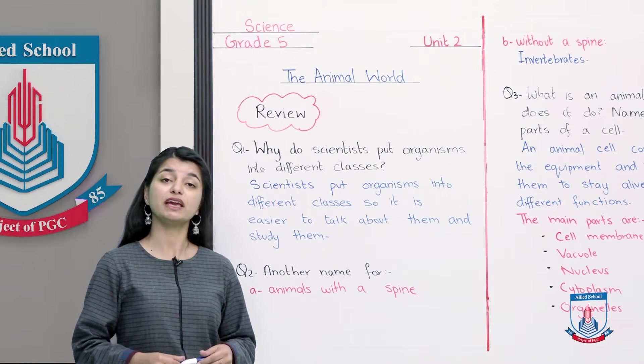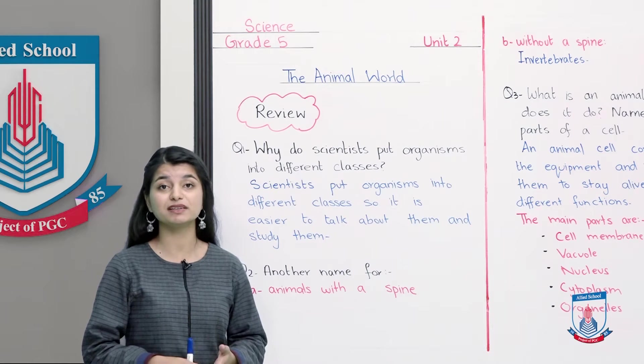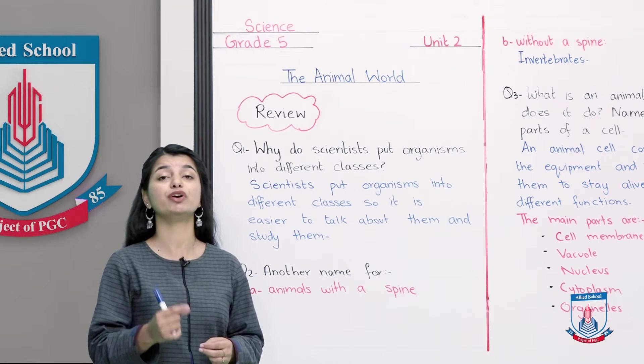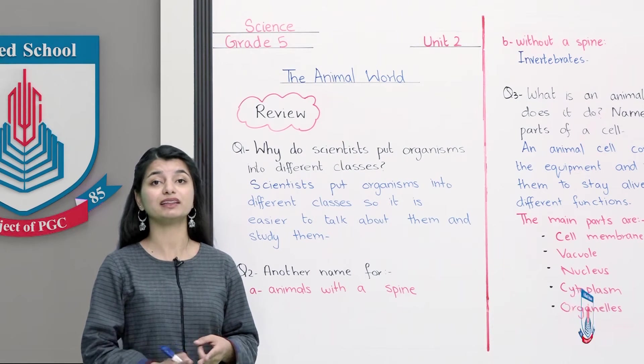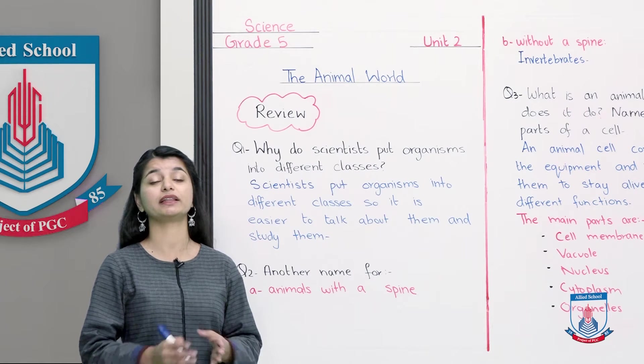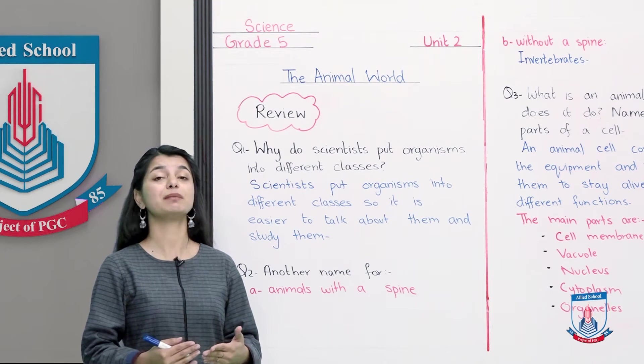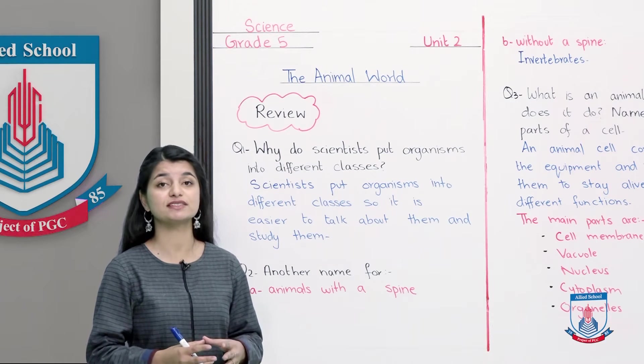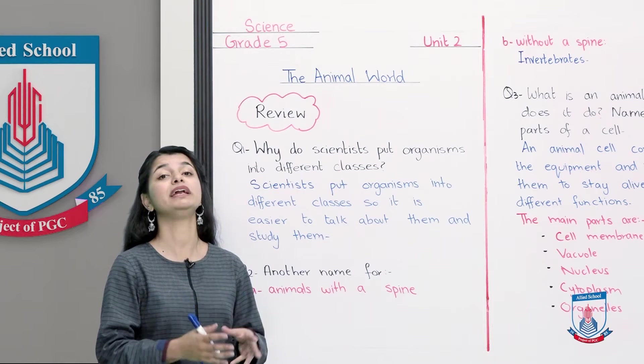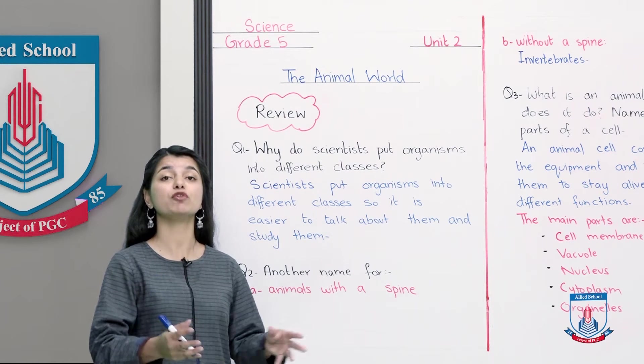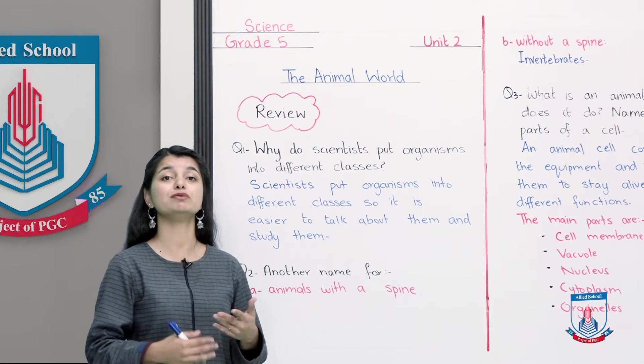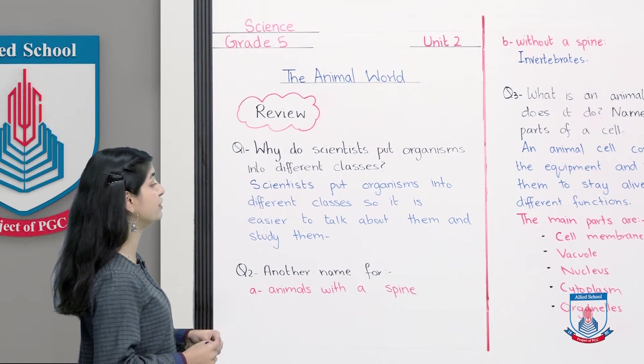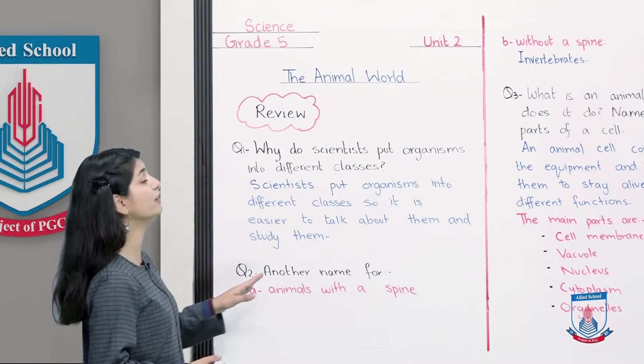The reason is that this is so that scientists can learn easily and study them and talk about them. In other words, every animal will be studied individually: where they live, what they eat, how they behave, how they reproduce. Scientists have thought that if all the animals are classified, they will be able to study all the animals and talk about them and learn more about them. The reason was that scientists put organisms into different classes, so it is easier to talk about them and to study them.